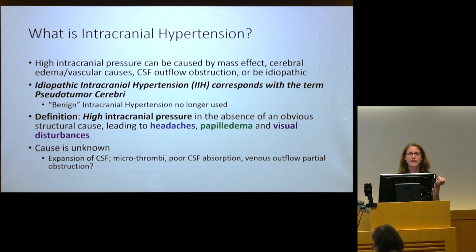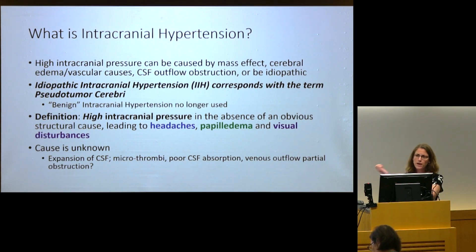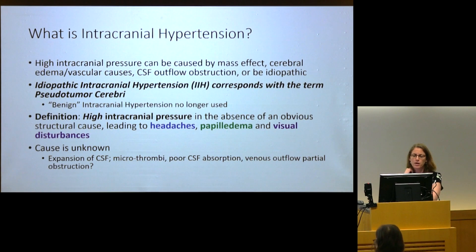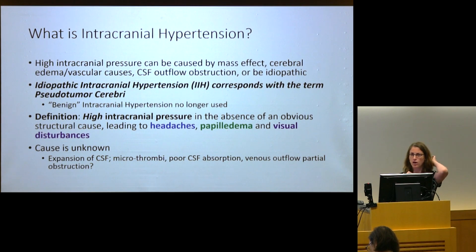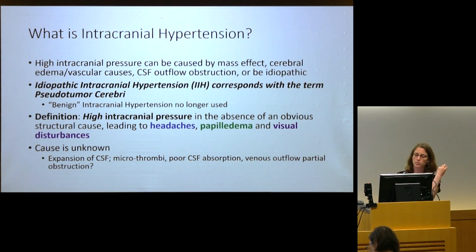Only until recently did I realize there's substantial overlap of symptoms between these disorders, including visual symptoms and even migrainous features. The cause of pseudotumor is unknown. We know about many metabolic and structural risk factors, but we really don't know what causes pseudotumor — why there's high pressure without expansion of the ventricles. Is it overproduction of CSF? Under-absorption? Microthrombi? We also think about venous outflow partial obstruction, something we may need to reconsider.